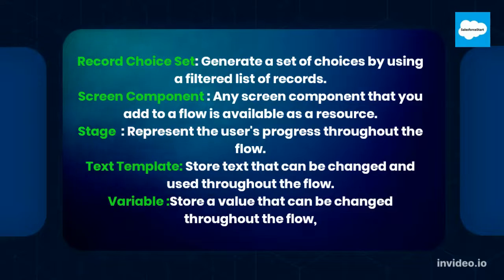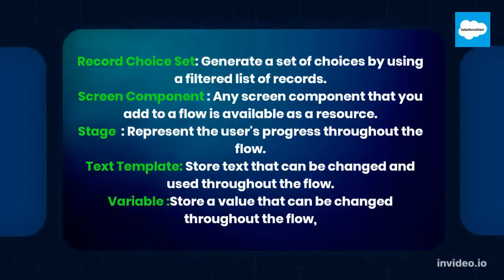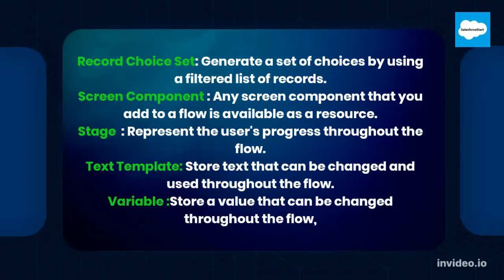Further resource types: Record Choice Set — generate a set of choices using a filtered list of records; Screen Component — any screen component added to a flow is available as a resource; Stage — represents the user's progress throughout the flow; Text Template — store text that can be changed and used throughout the flow; Variable — store a value that can be changed throughout the flow.